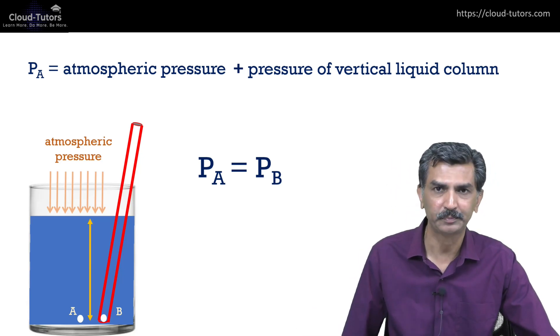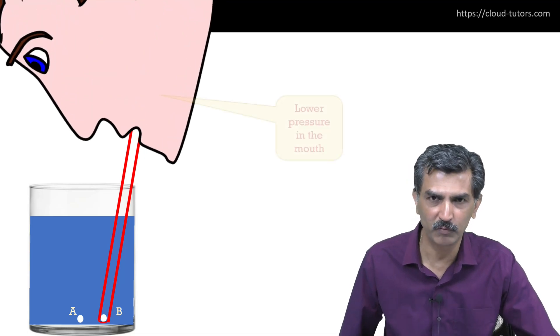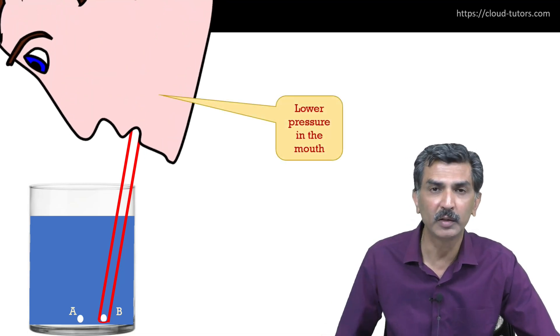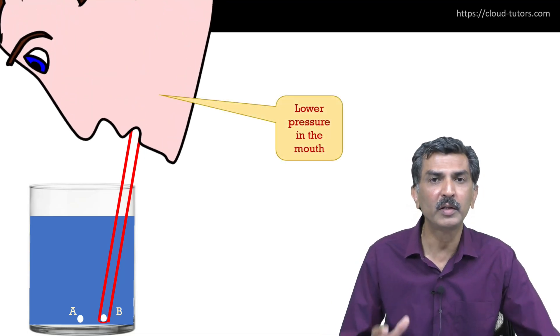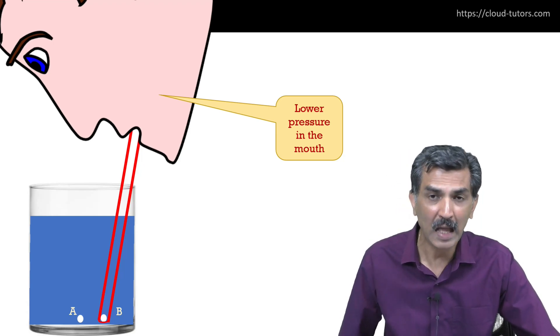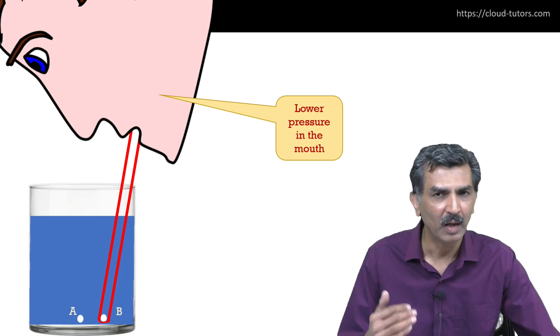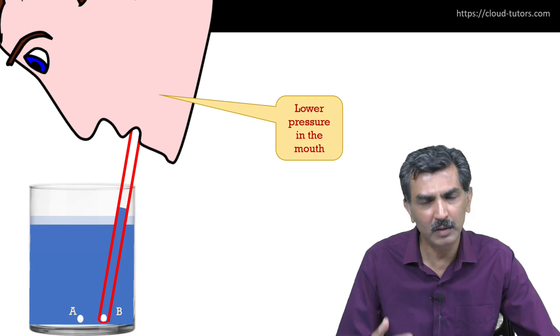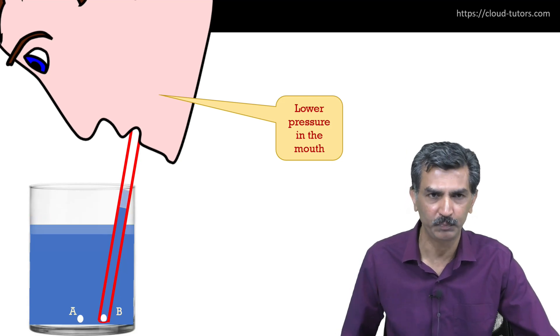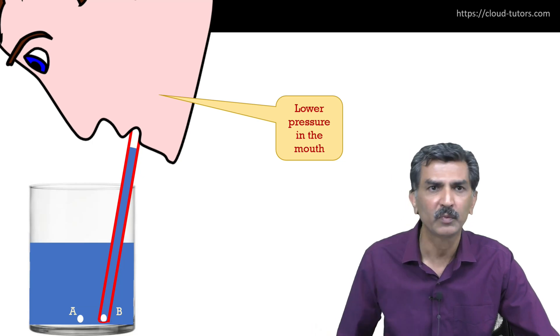Now if you go back to this situation where you start sipping something with a straw, you are creating an area of low pressure in your mouth. Let us consider the pressure at points A and B as the liquid begins to rise in the straw.